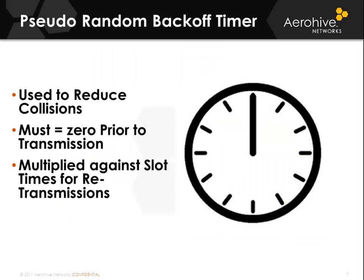The pseudo-random backoff timer is used to reduce collisions. On a wired network, if two devices transmit at the same time and their frames collide, you would use collision detection — both devices would hear the collision, kick off their pseudo-random backoff timer, count that down, transmit, and miss each other. However, with Wi-Fi you cannot detect collisions, so the pseudo-random backoff timer is used to reduce collisions by counting down prior to transmission. The pseudo-random backoff timer must be counted down all the way to zero prior to transmitting, and it is multiplied against slot times for retransmissions.